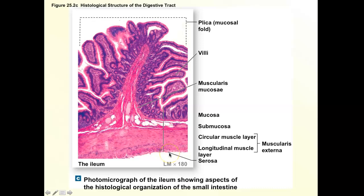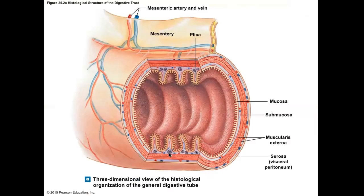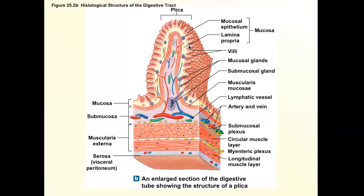You would simply point to the outside and say that's the serosa. Now, how do you know this is small intestine? If you were walking inside the small intestine, you'd go up a hill, down a hill, up a hill, down a hill — those are called plica, and they are specific to the small intestine. Let's find the plica in the histology slide.